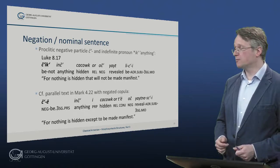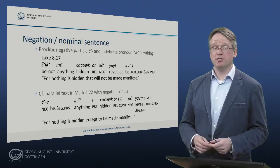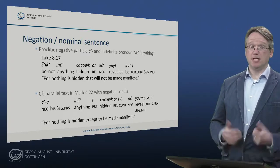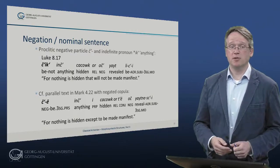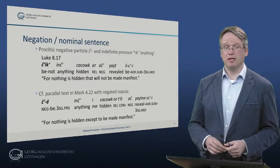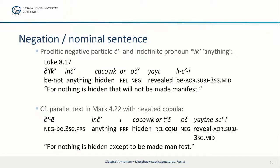Where copula verbs are absent: the negation of existence can be expressed by a simple nominal clause with the proclitic negative particle 'č' and the indefinite pronoun 'ik' (anything). In Luke 8:17: 'čik' — there is nothing hidden that will not be made manifest. Interestingly, in the parallel text Mark 4:22, the translator uses the copula verb: 'čir a' — nothing is hidden except to be made manifest.